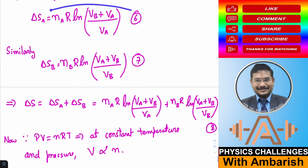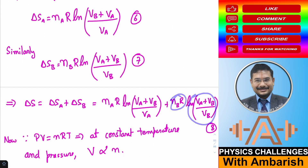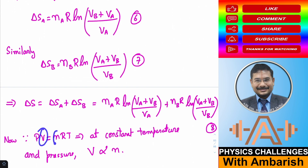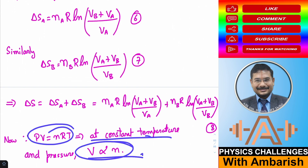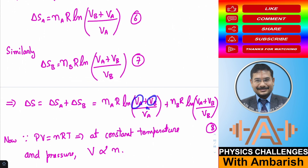The total entropy change is ΔS = nₐR·ln((Vₐ + V_b)/Vₐ) + n_b·R·ln((Vₐ + V_b)/V_b). Since pV = nRT, at constant pressure and temperature volume is proportional to moles, so Vₐ/( Vₐ + V_b) = nₐ/(nₐ + n_b) and similarly for b. We can therefore replace the volume ratios with mole ratios.